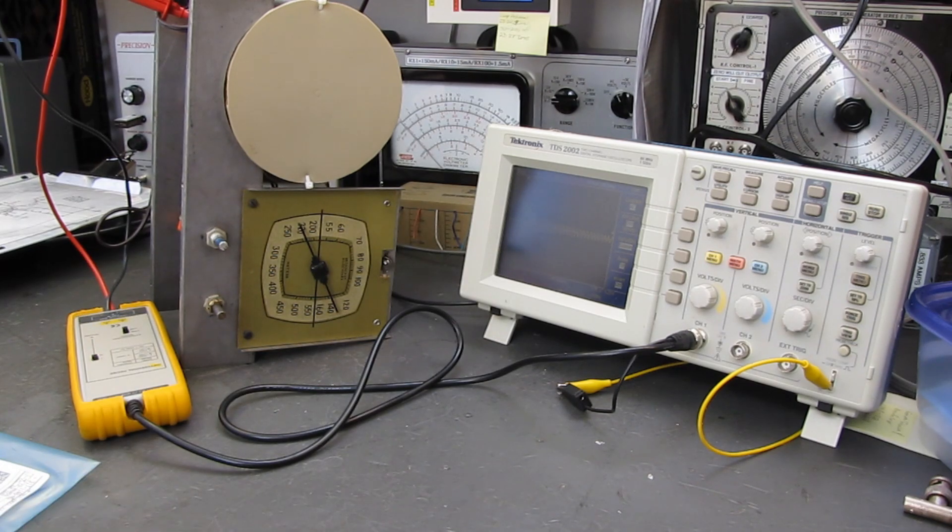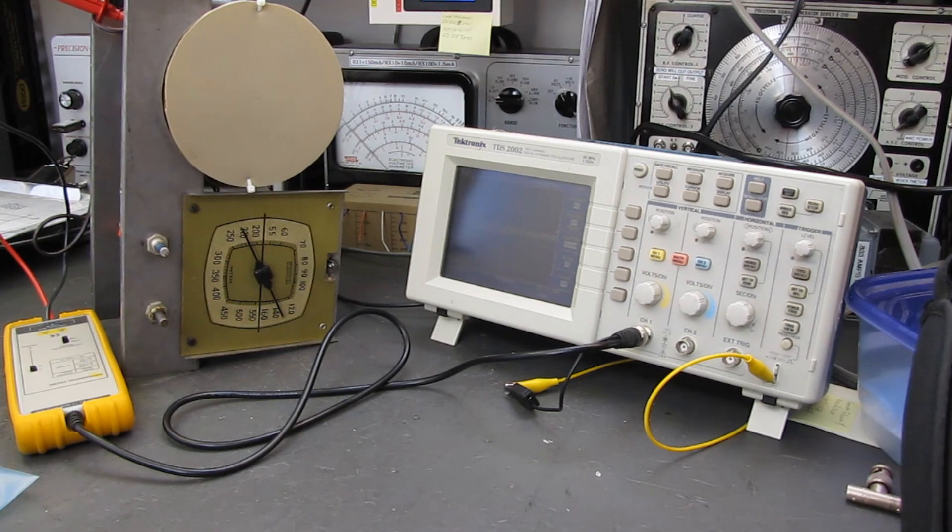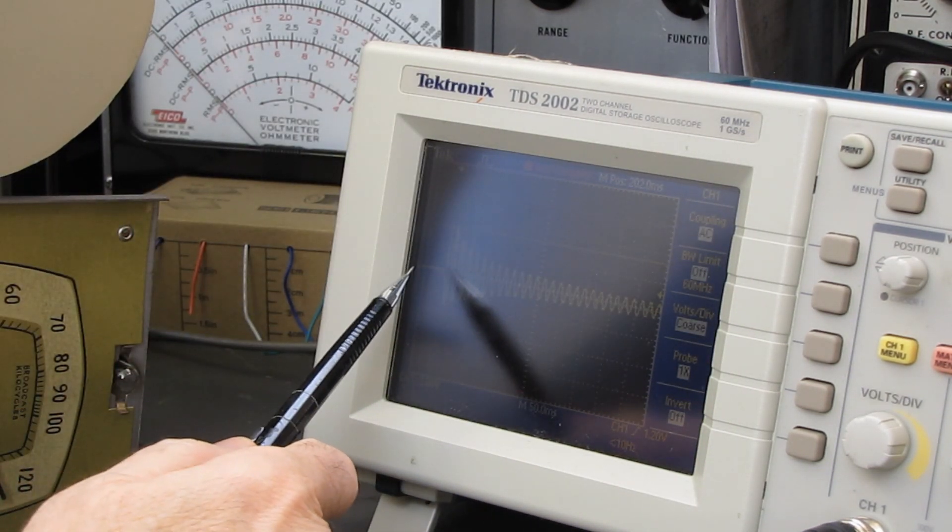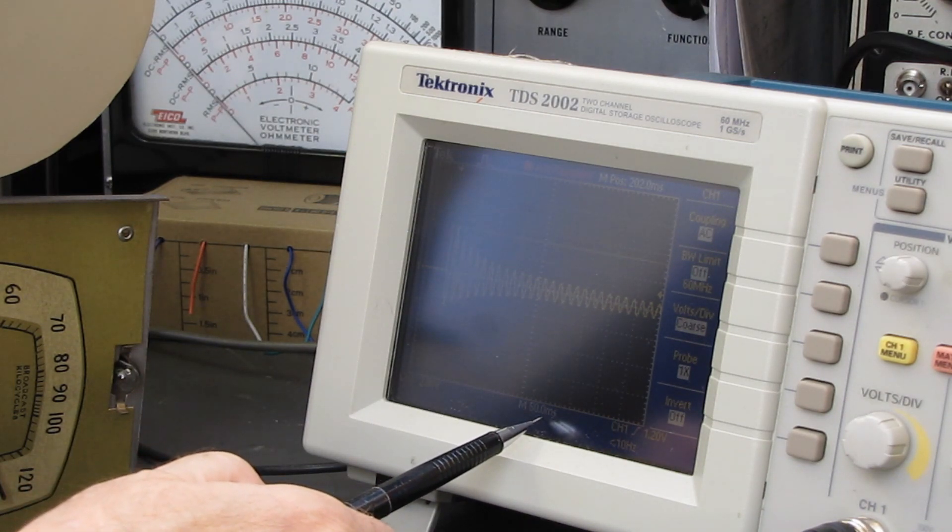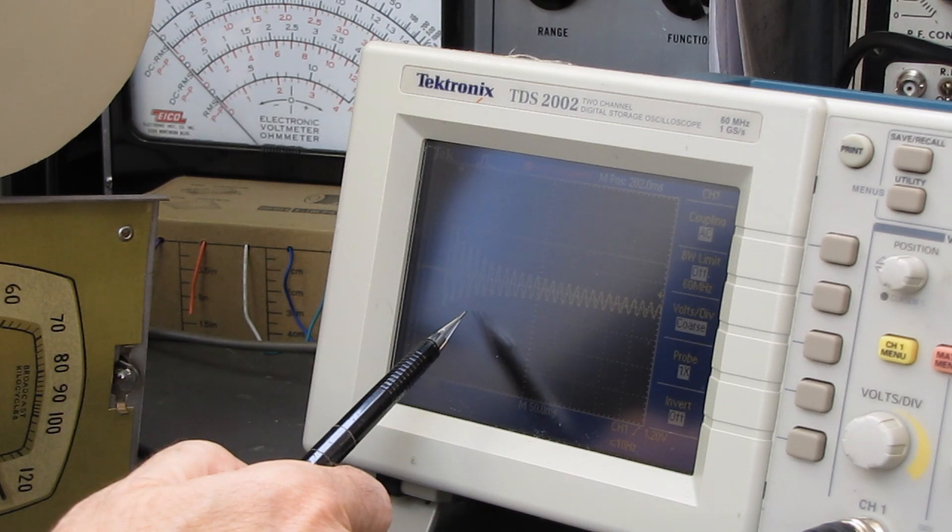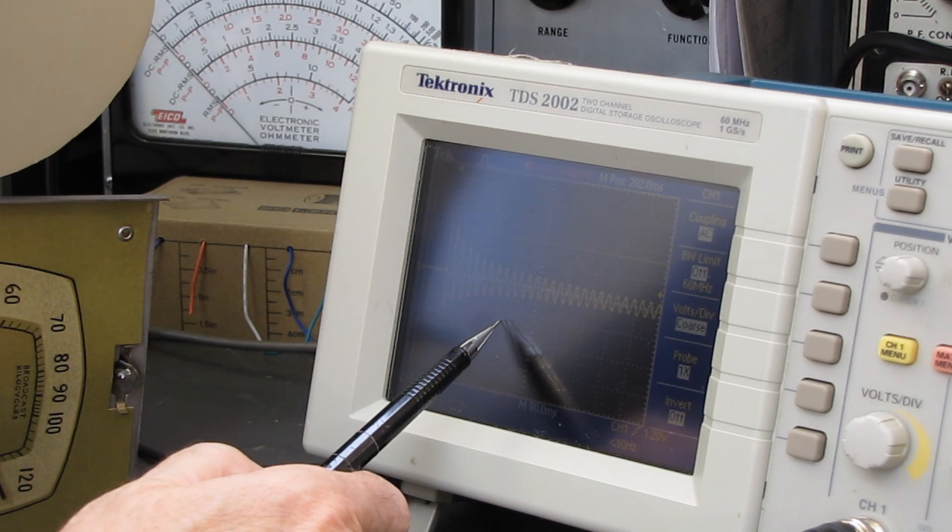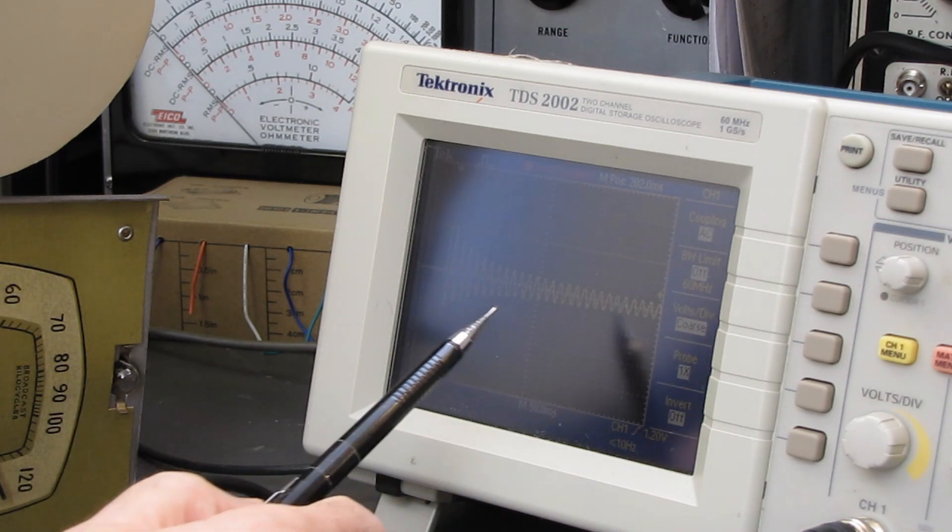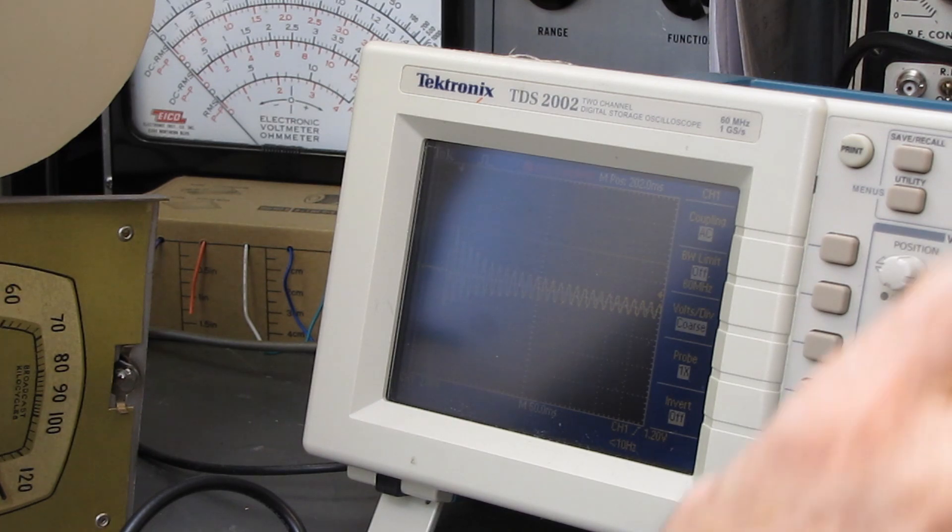And there we go. I don't know how well you can see that on the scope. I hope that stayed in focus. You can see the cold start here. Now this is 50 milliseconds per division. So at least 150 approaching 200 milliseconds, it's limiting the inrush.